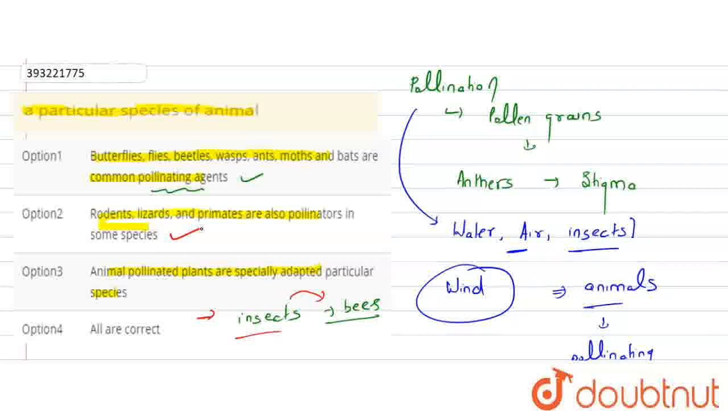Often, the flowers which are pollinated by animals are specifically adapted for particular species. For a particular species of animals. So the third statement is correct.